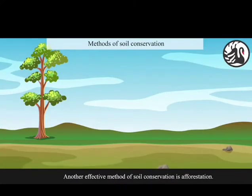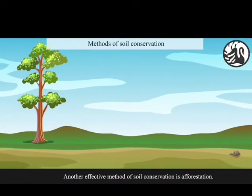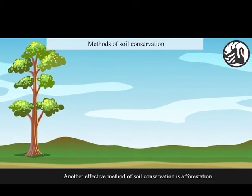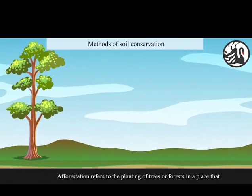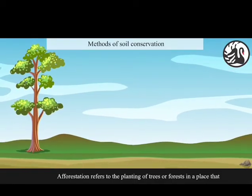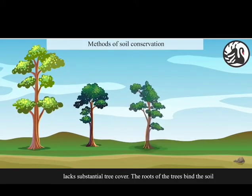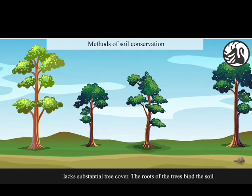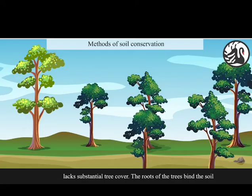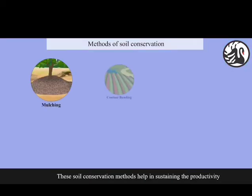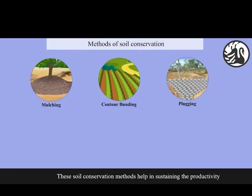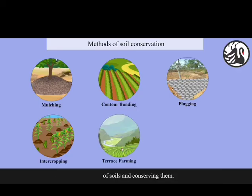Another effective method of soil conservation is afforestation. Afforestation refers to the planting of trees or forests in a place that lacks substantial tree cover. The roots of the trees bind the soil and prevent it from getting washed away. These soil conservation methods help in sustaining the productivity of soils and conserving them.